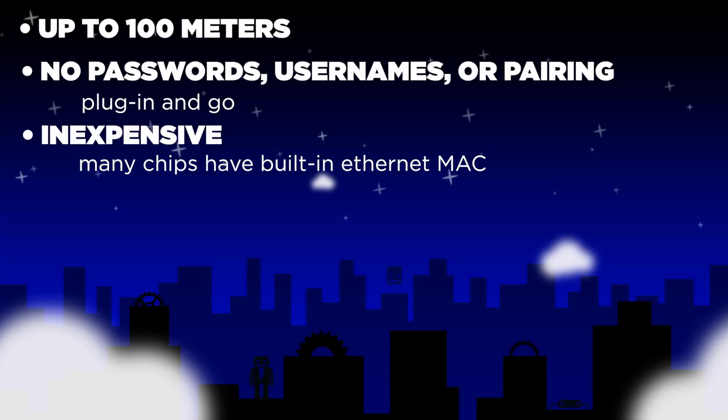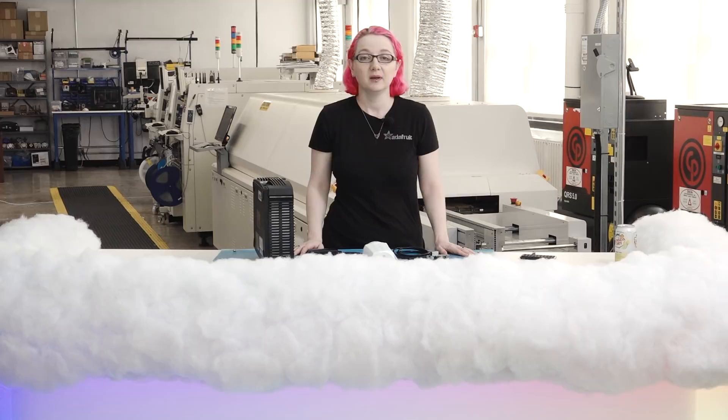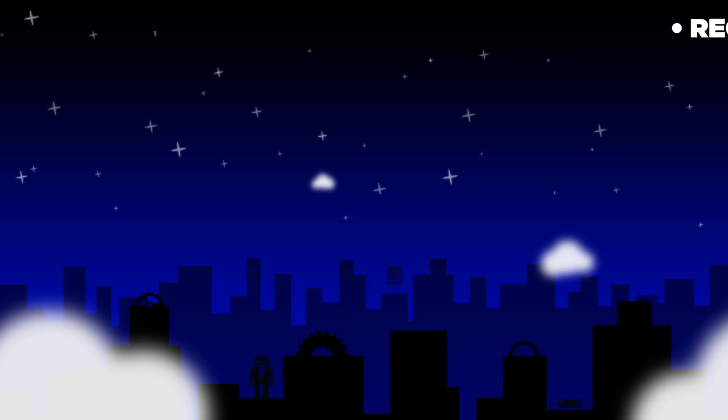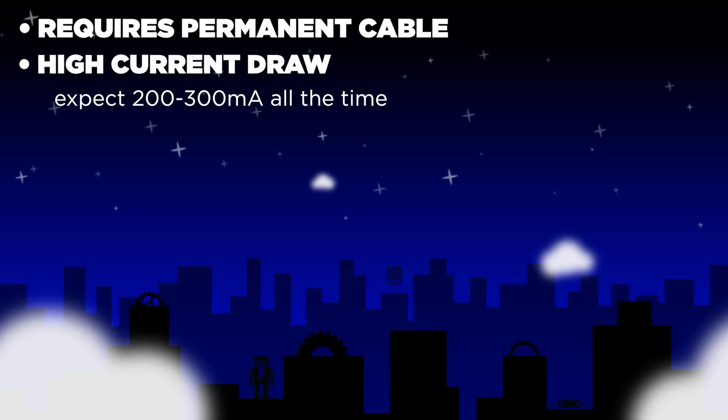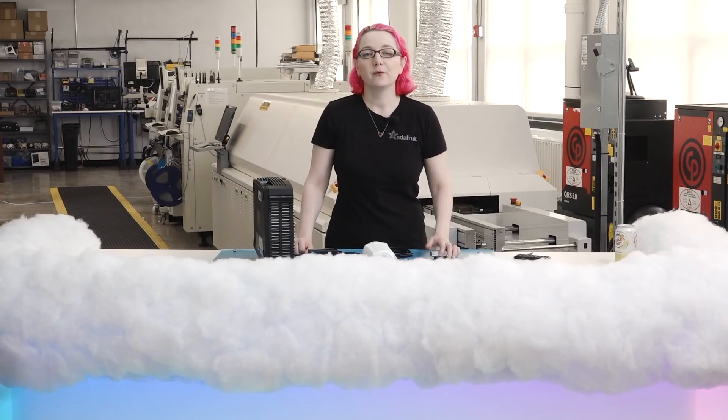Ethernet can be used as a private network or connect directly to the worldwide Internet. There are some downsides: it requires a permanent cable connection and has high current draw — expect 200 to 300 milliamps at all times. There's a large and chunky connector, so if your project has to be small, it's not going to fit. Watch out for default passwords on things that plug in directly to the Internet. The biggest benefit of Ethernet is that high-speed and plug-and-play capability.